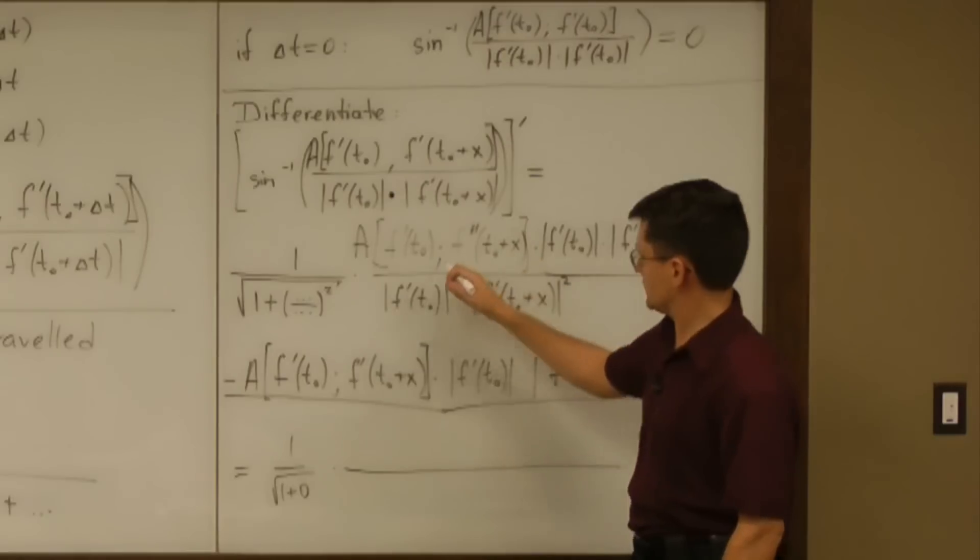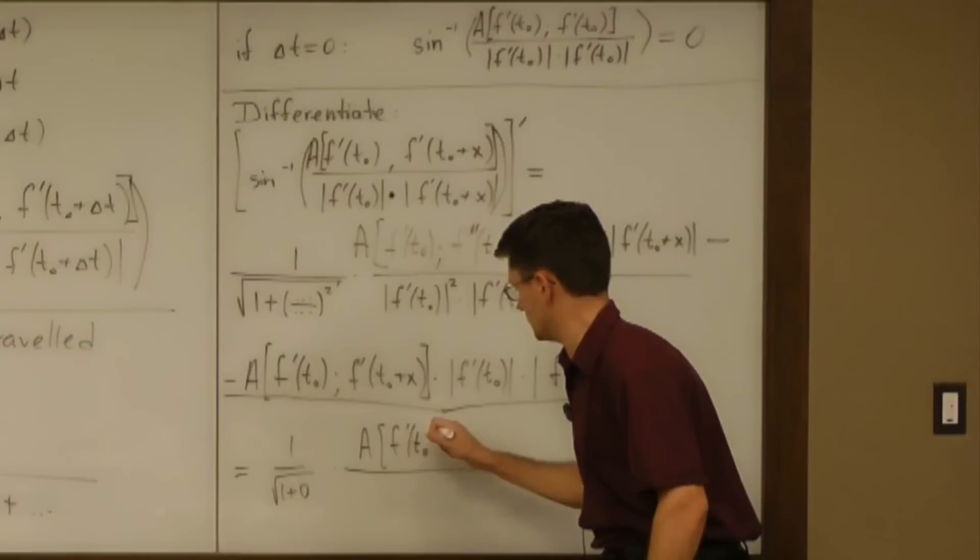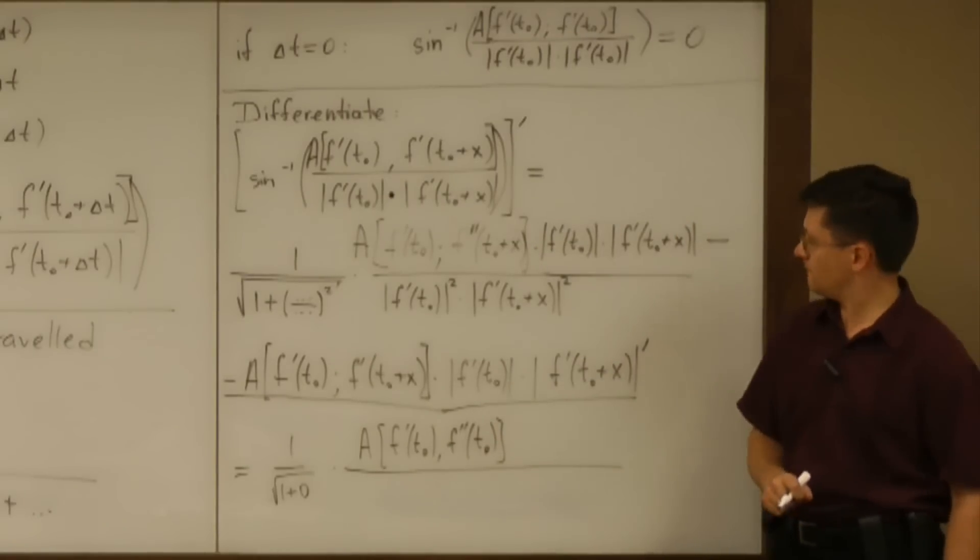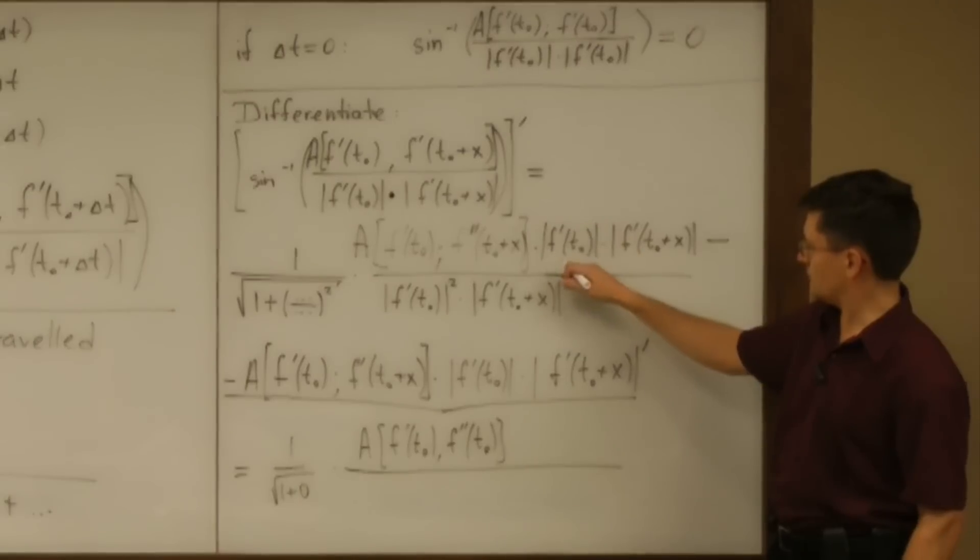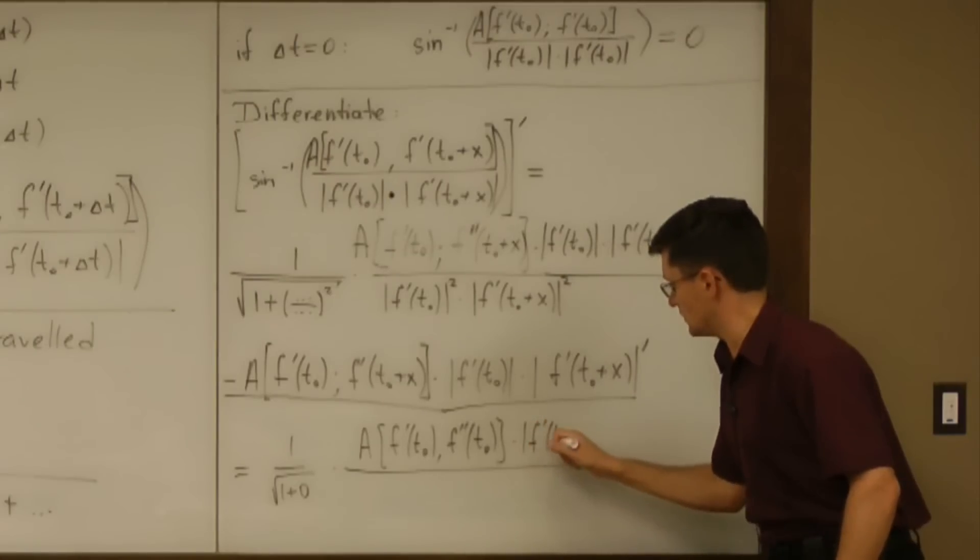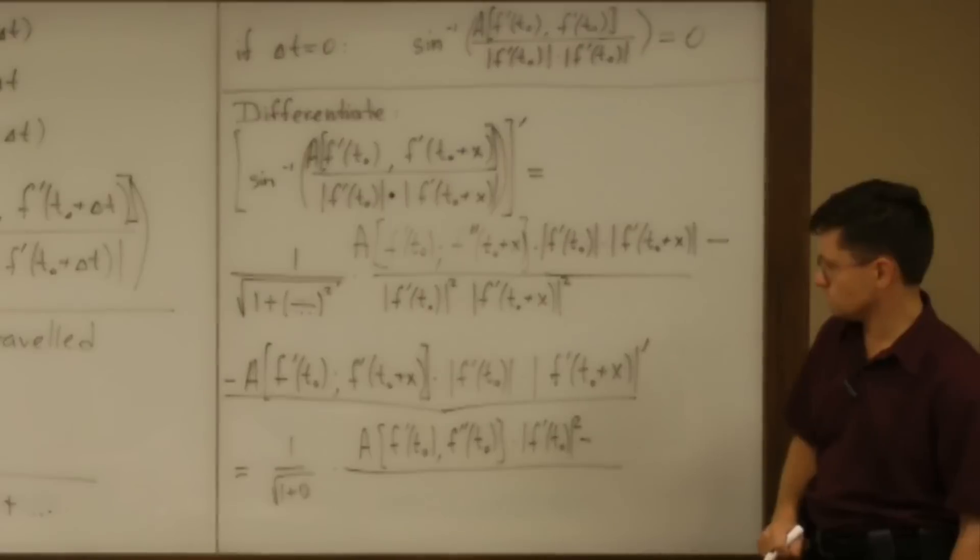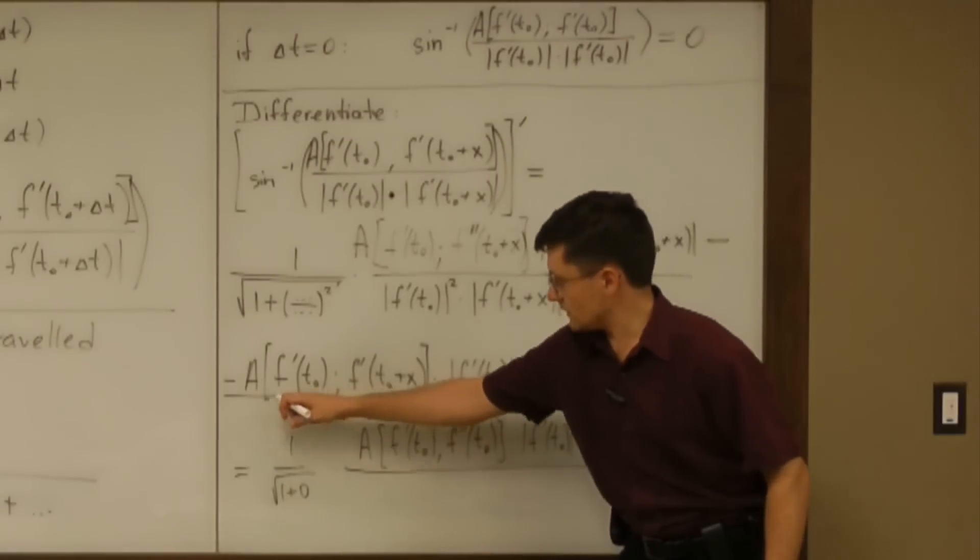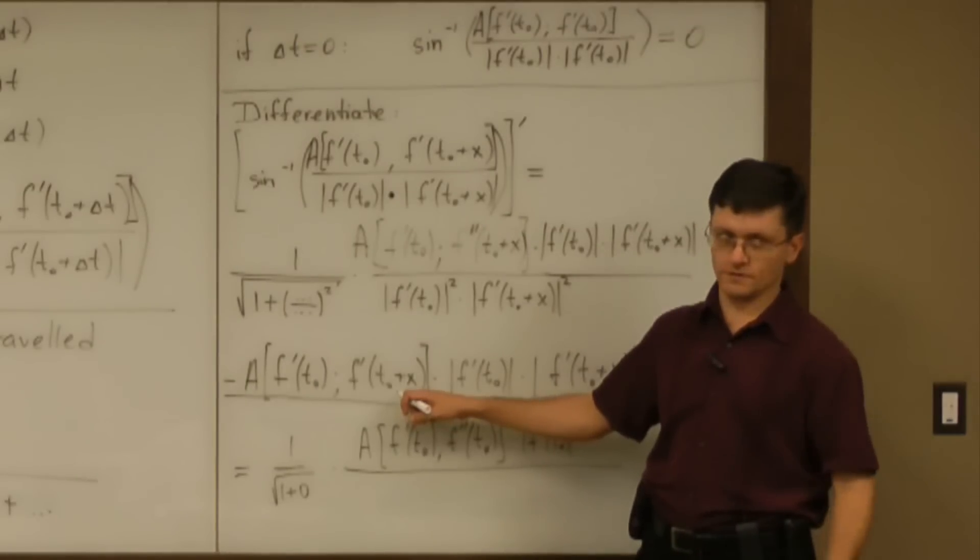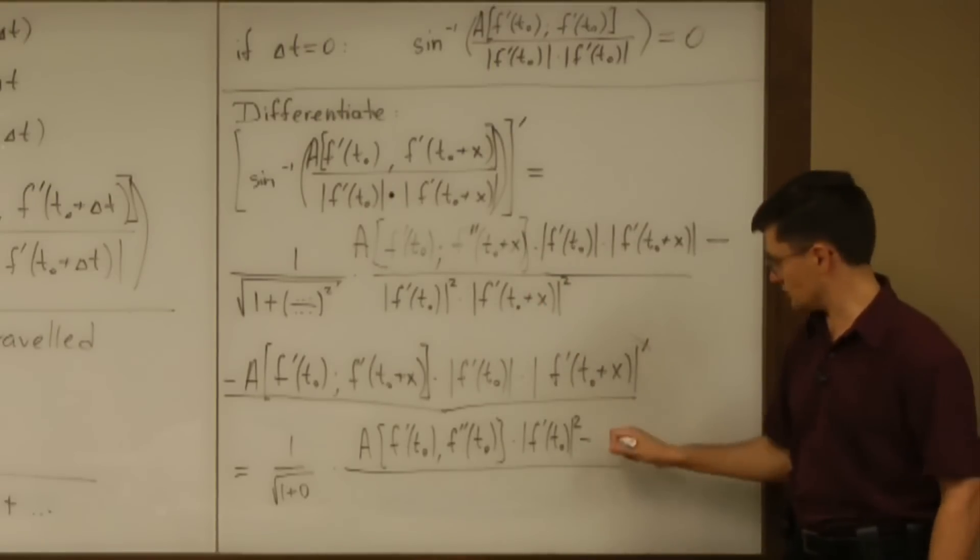If you substitute x equals zero, I have area on f prime of t zero and f double prime of t zero. Times magnitude of f prime of t zero and magnitude of f prime of t zero. So it is magnitude of f prime of t zero squared. Minus area of f prime of t zero and f prime of t zero. What is that? That's zero. And I don't have to evaluate that derivative because the whole thing is zero. So minus zero.